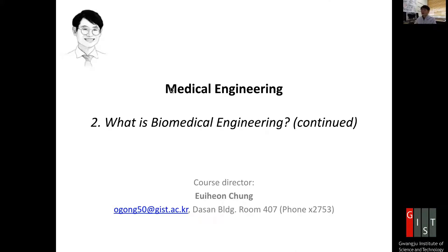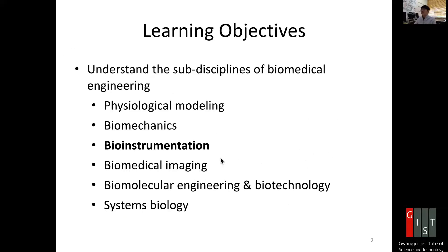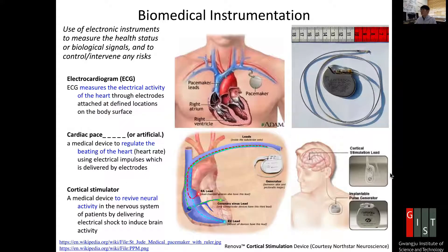Hi, now we're going to discuss biomedical engineering and what's biomedical engineering by examples, especially for bio-instrumentation. Bio-instrumentation is using electronic instruments to measure the health status or biological signals to control or intervene any risks. There are three examples I put in here.